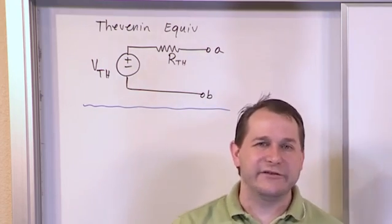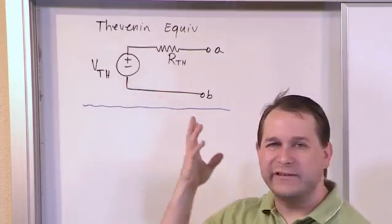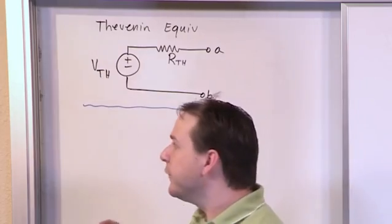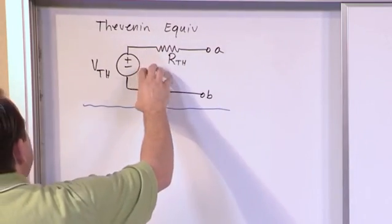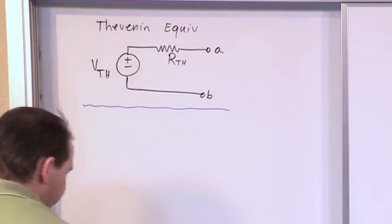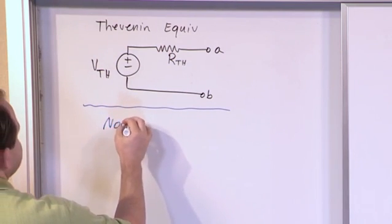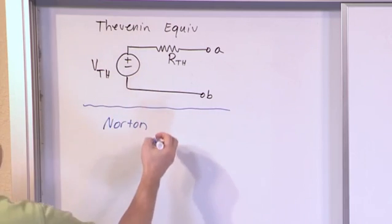But now we've said we can represent any circuit by this Thevenin equivalent, which is simply a voltage source that is in series with a resistance. So therefore, you can always switch between a Thevenin equivalent and, you guessed it, a Norton equivalent, which is just when you transform this guy.